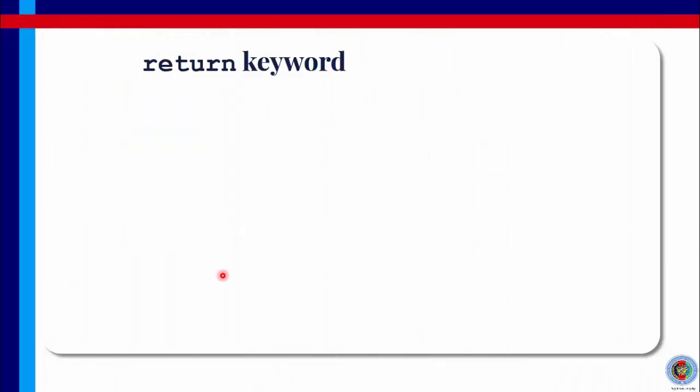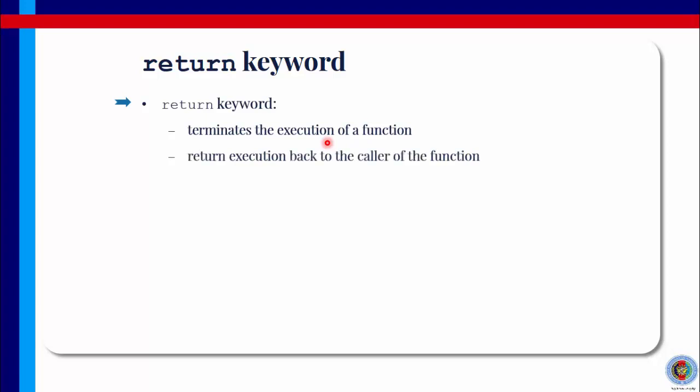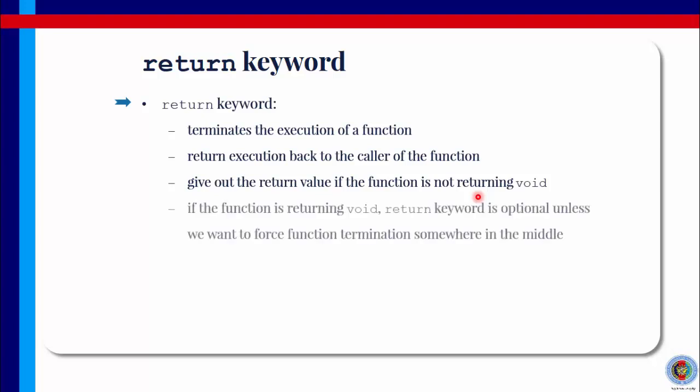More on the return keyword. The return keyword will terminate the execution of a function. And the execution returns back to the caller of the function. Where the execution transferred from somewhere else to this function, it goes back to the same point. It gives out the return value if the function is not void. Which means if the function returns something, the return keyword will give that value to the caller. If the function is returning void, the return keyword is optional, unless we want to force the function to terminate somewhere in the middle. And this return keyword may appear anywhere in the function body. It is not necessarily at the end of the function.